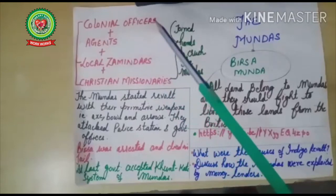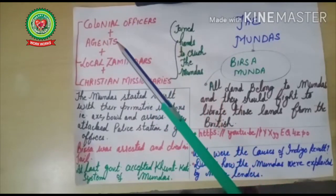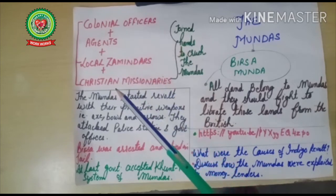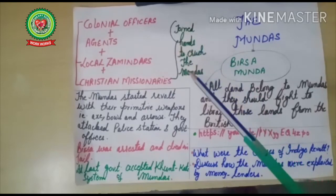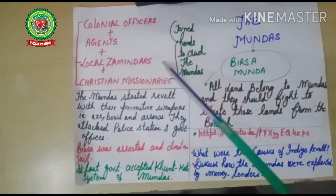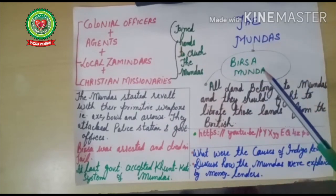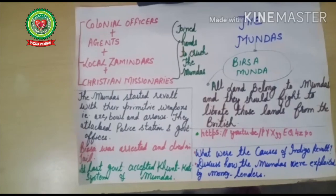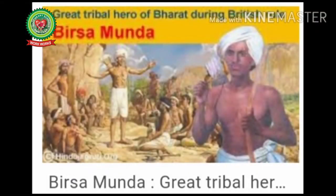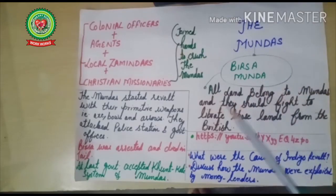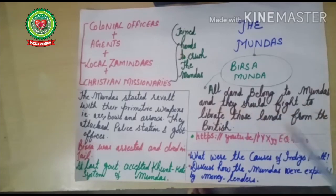The colonial officers, the agents between local zamindars and peasants, the local zamindars, and the Christian missionaries all joined hands to crush the power of the Mundas. The Mundas were led by a local leader called Birsa Munda — whose picture is visible on screen. He believed that all land belonged to the Mundas and that they should fight to liberate those lands from the British government.